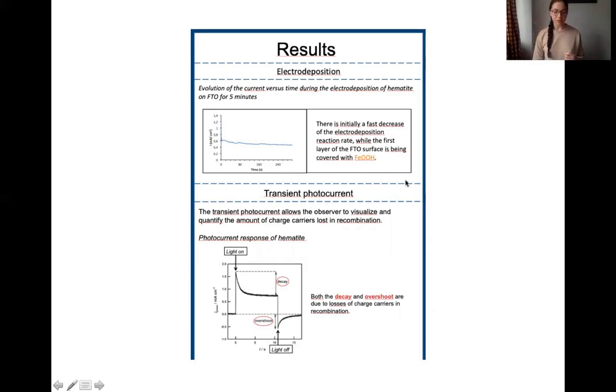About the analysis, a transient photocurrent is a super interesting measurement to do because it allows us to visualize and quantify the amount of charges that are lost in recombination. Here we see a typical response, a photocurrent response of hematite.